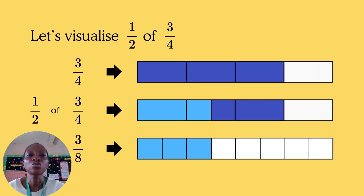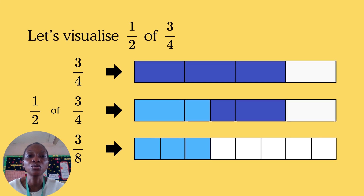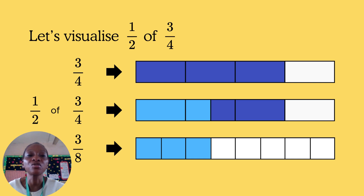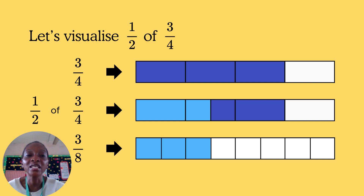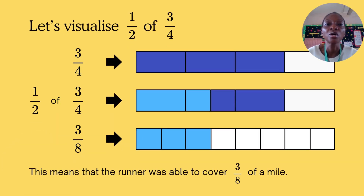Let's visualize one over two of three over four. Here we are going to be drawing three rectangles. The first one represents three over four — you divide your rectangle into four parts and shade three out of four. To get our half out of three over four, you shade half of that three: you shade one and shade half of another one. We now divide each part into two parts again, giving a total of eight parts. Shading three out of eight, you discover that three over eight is the same as one over two of three over four.